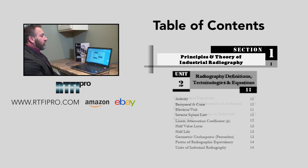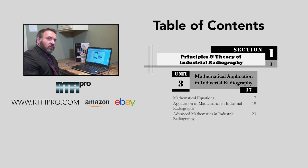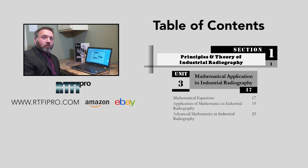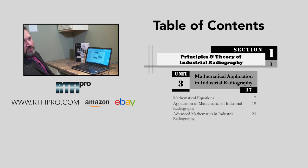Unit three is the math portion, broken down into regular math and then more advanced math for level three content. The questions are there and the math is provided, showing you how to do it. We have mathematical equations — about 20 equations — applications of mathematics in industrial radiography, and then advanced mathematics in industrial radiography.